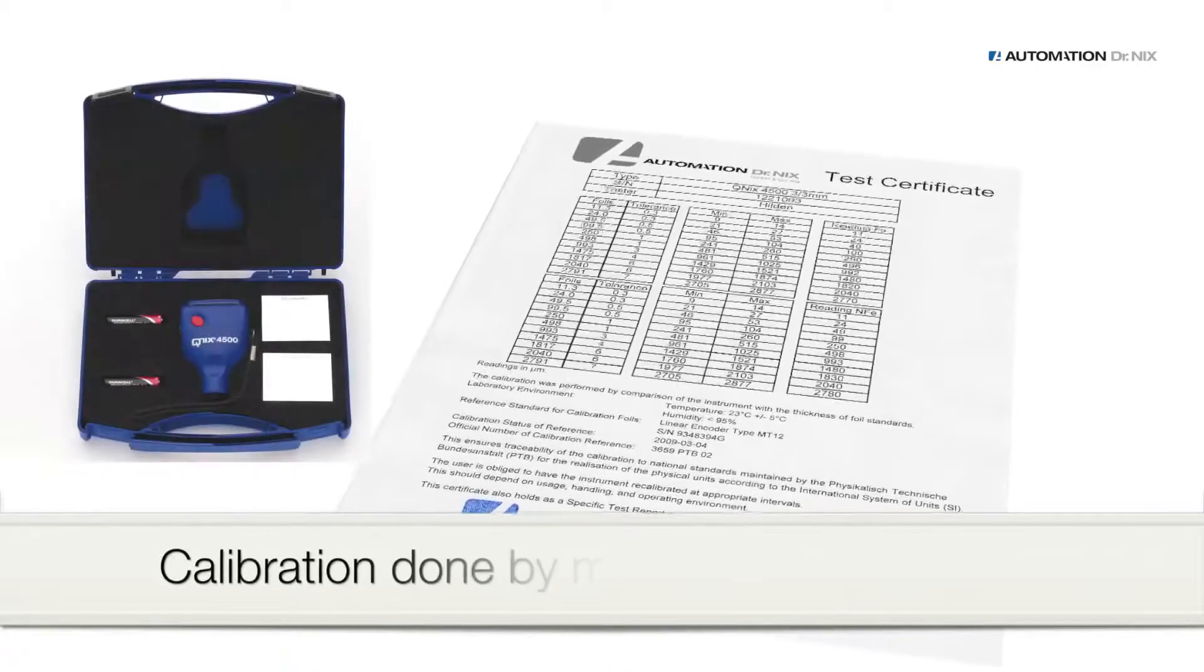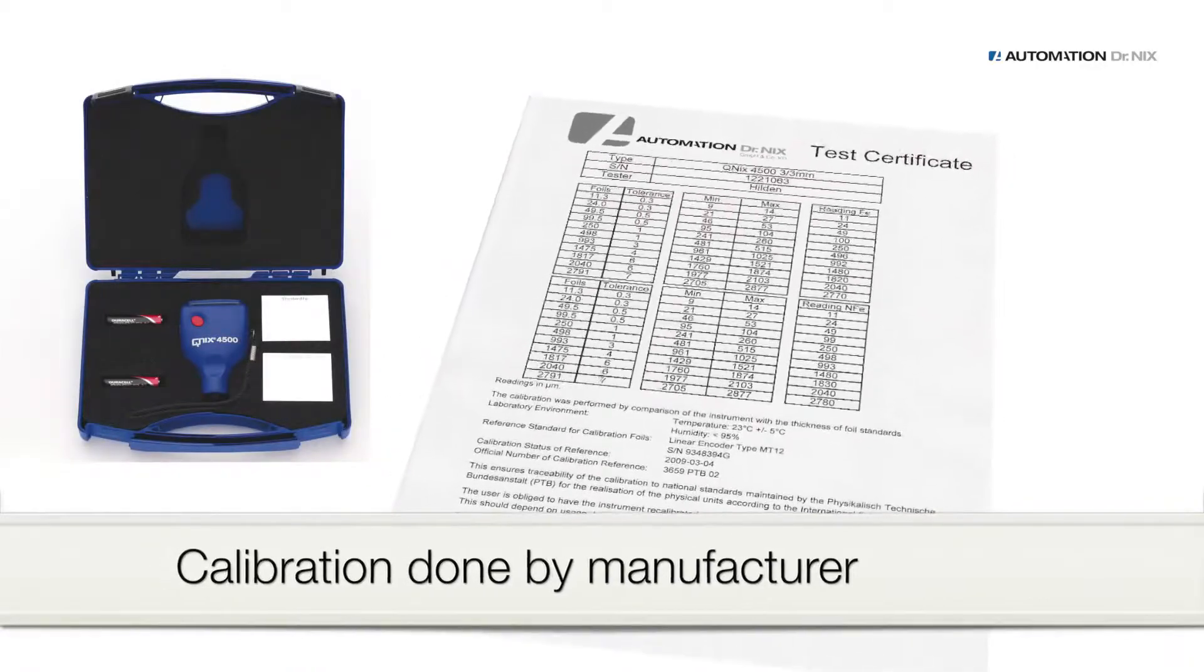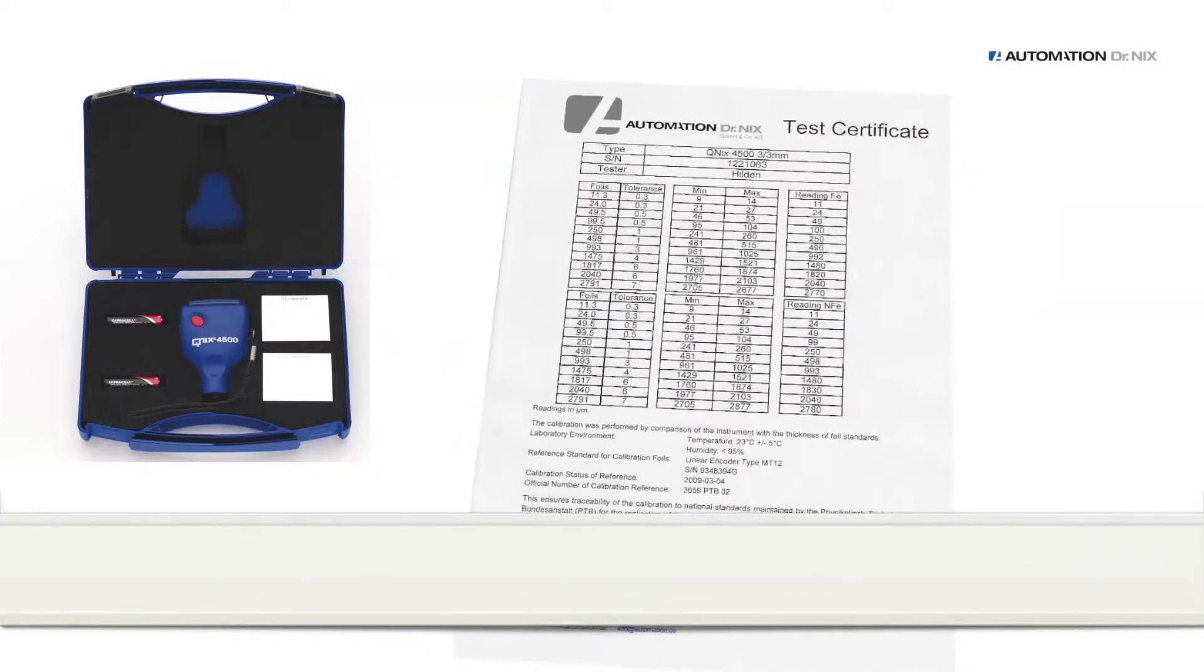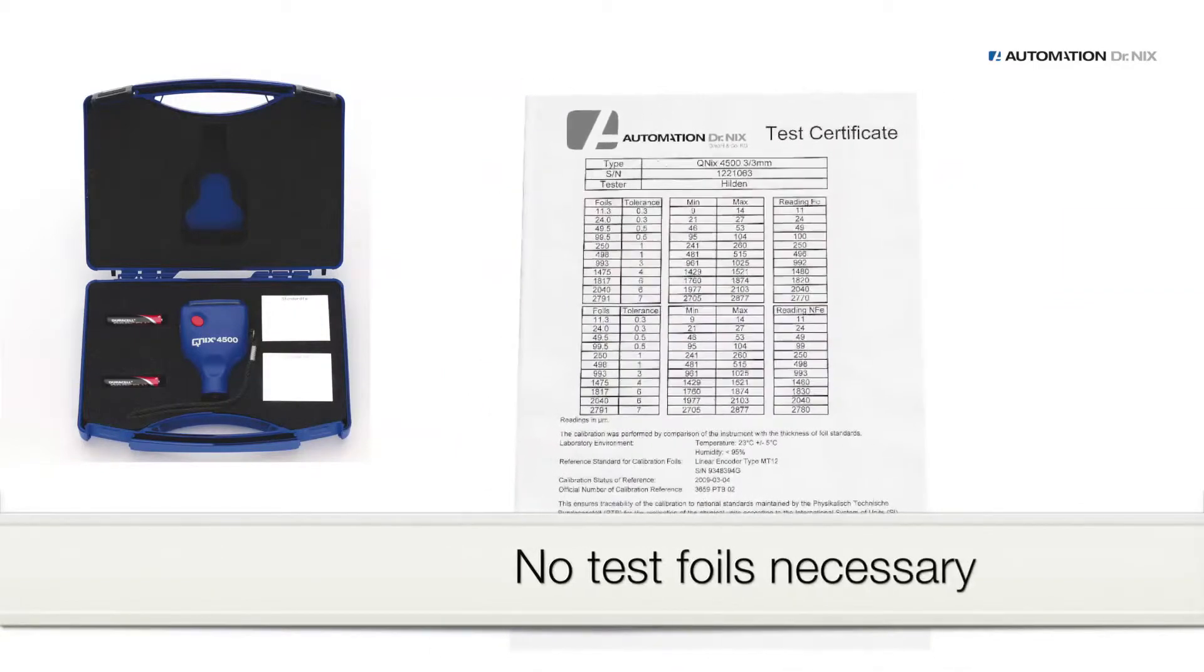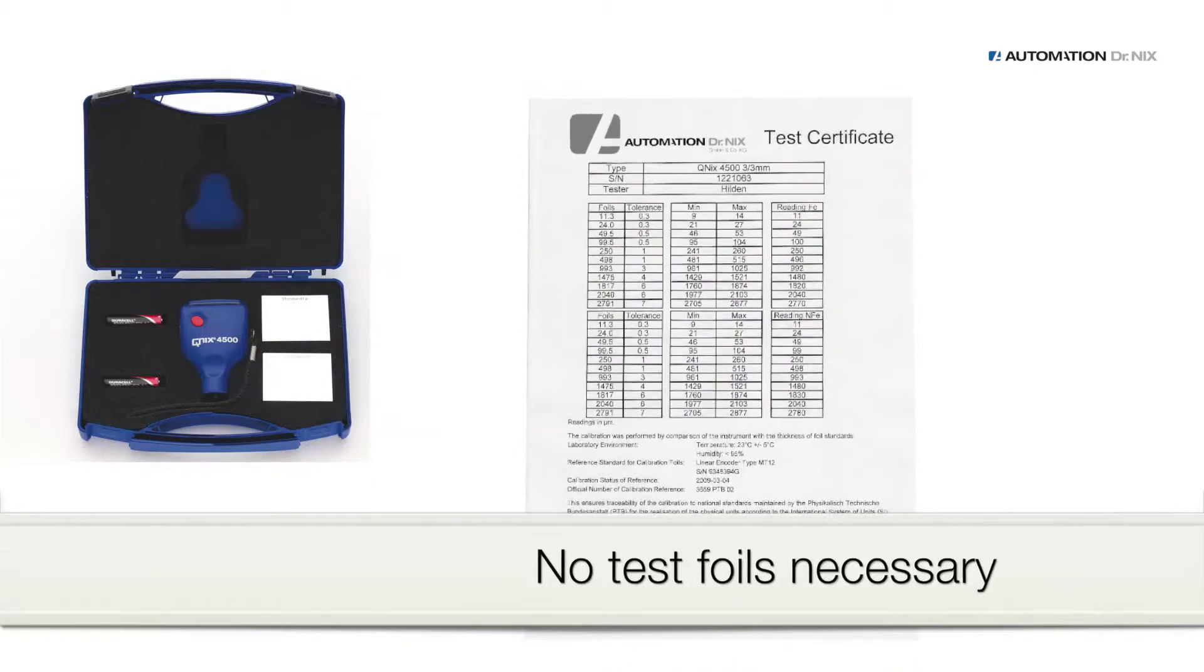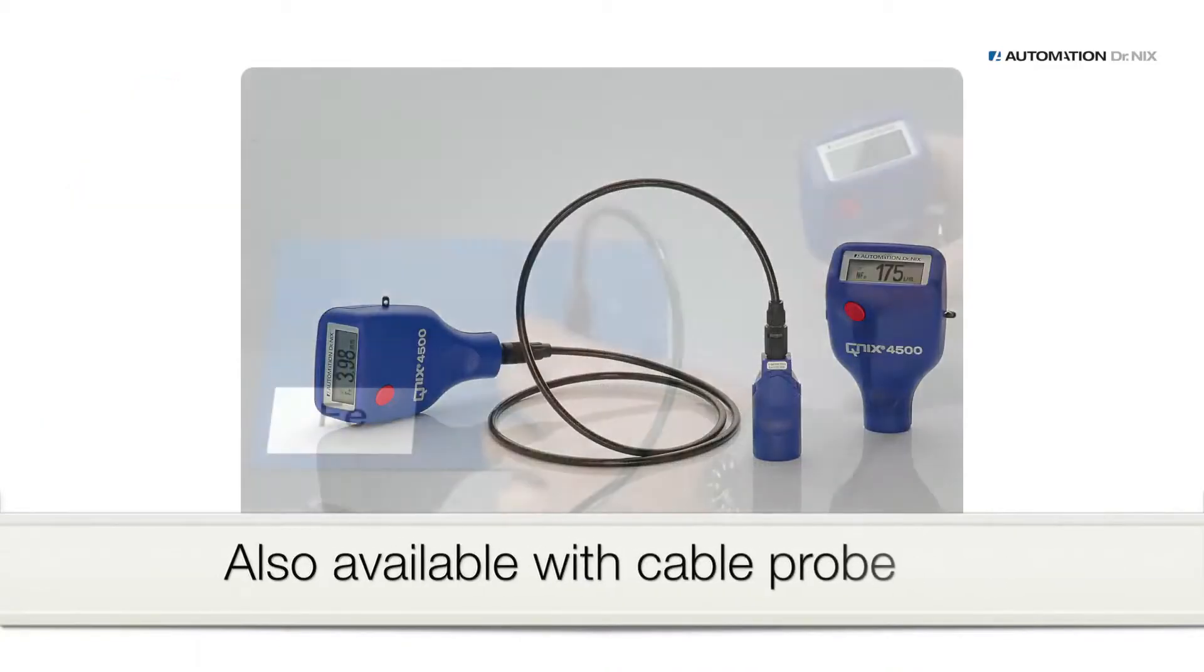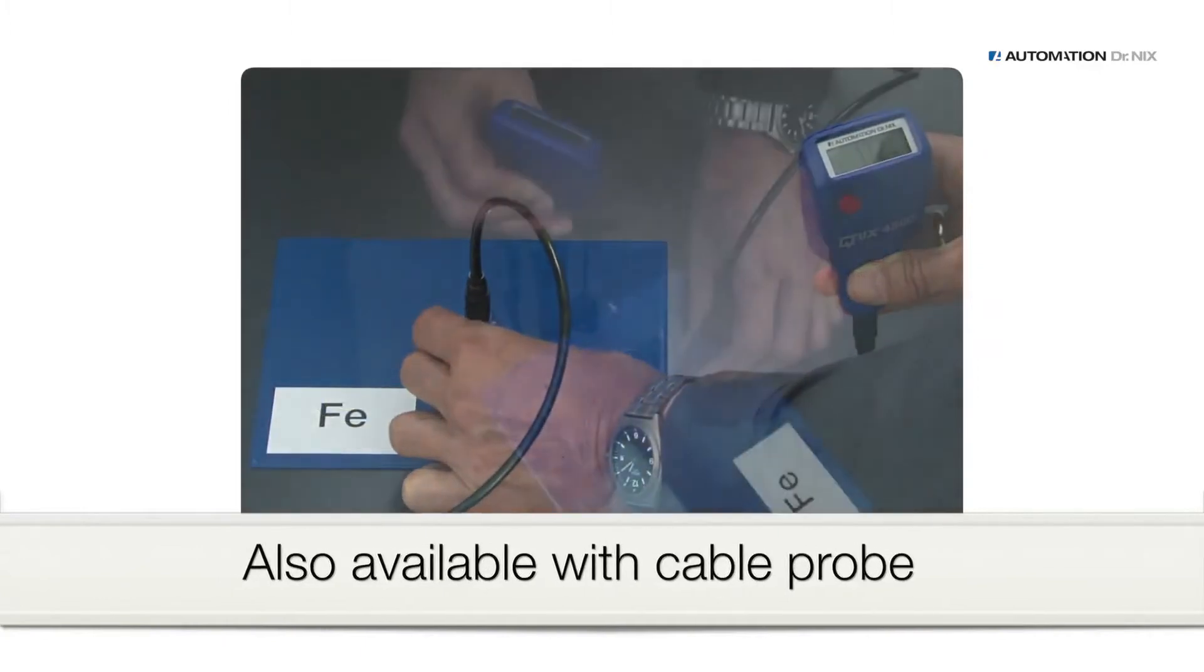The manufacturer calibrates the gauge as proven by the provided certificate. The accuracy of our gauges is maintained and it is unnecessary to calibrate the gauge prior to each measurement based on test foils, as has to be done with gauges from other manufacturers. The QNIX 4500 is also available with cable probe.